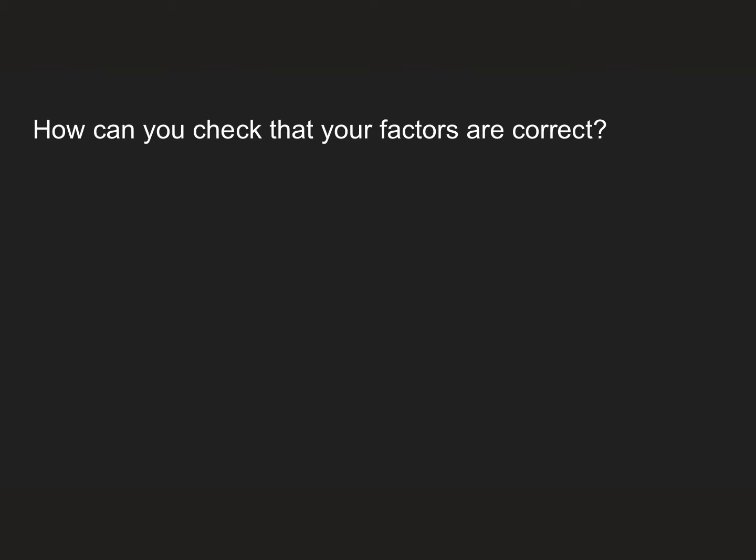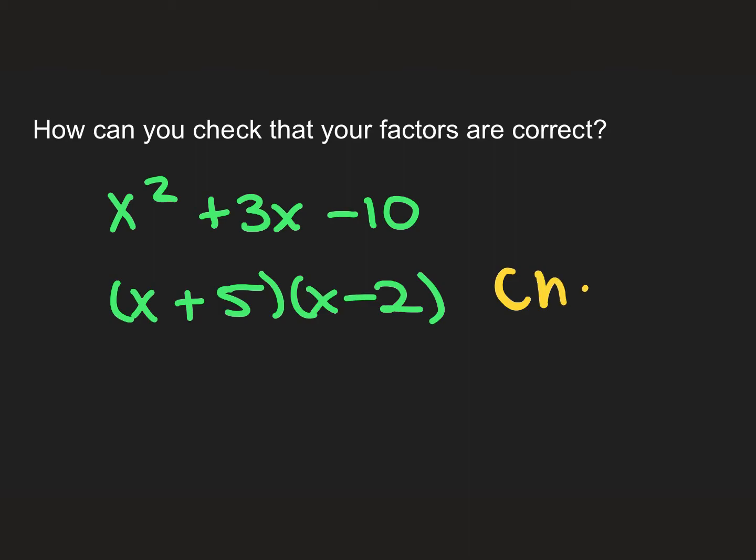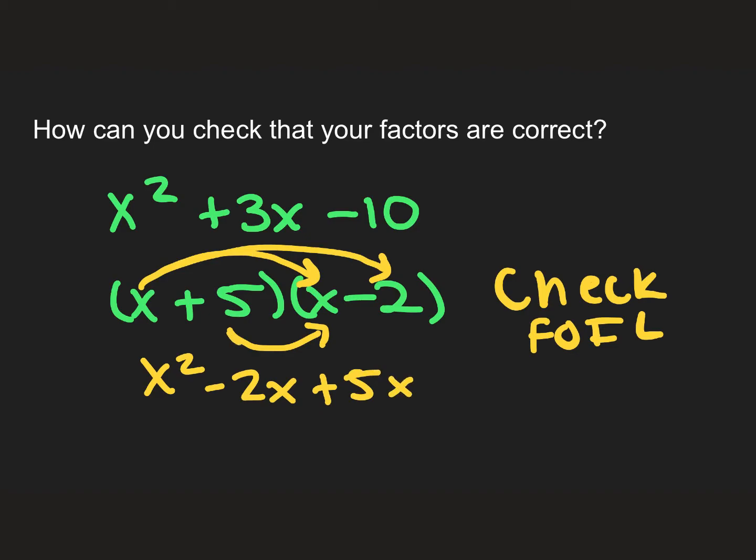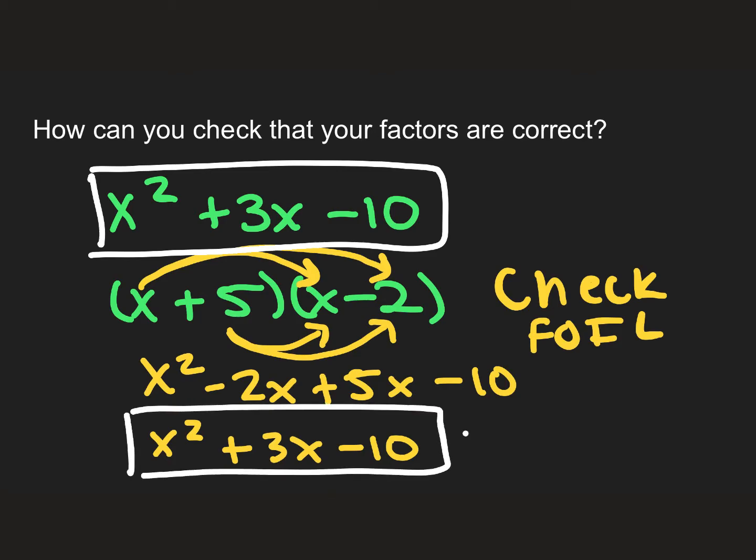The next problem says, how can you check that your factors are correct? If I have my problem, let's say I was given the problem of x² + 3x - 10, and I got my answer is (x + 5)(x - 2). If I want to check, you can use the FOIL method for multiplying binomials. So when I do this, I multiply x times x, which gives me x², x times -2, which is -2x, 5 times x, which is +5x, and 5 times -2, which is -10. And this simplifies to x² + 3x - 10. So since my original problem and my answer are the same, I know that my answer is correct.